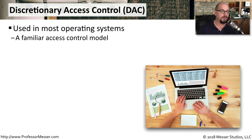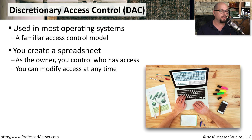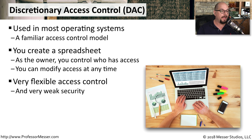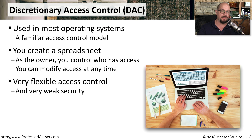Discretionary Access Control, or DAC, is an access control model that most people will probably be familiar with because it's used in most operating systems we use today. For example, if you create a spreadsheet, you as the owner get to determine who else in your environment has access and what type of access they have to that spreadsheet, and you can modify that access at any time. This makes for a very flexible access control model, but it's also a very weak form of access control security because it relies on the owner of the file to be setting the proper security for that particular object.